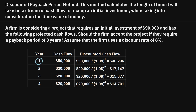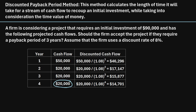In year one, the project is expected to cash flow $50,000. In year two, it is expected to cash flow $20,000. In year three, another $20,000. And in year four, another $20,000.